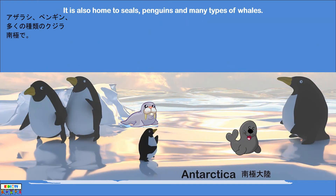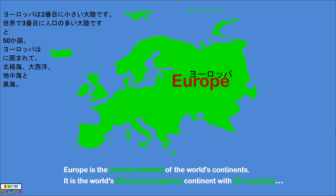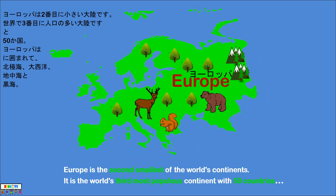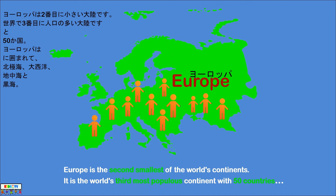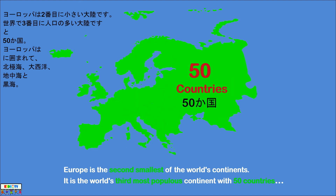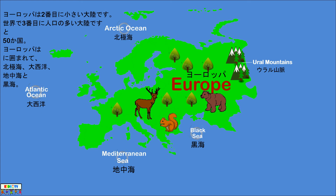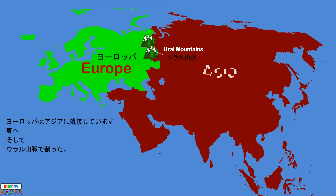Antarctica is also home to seals, penguins, and many types of whales. Europe is the second smallest of the world's continents and the world's third most populous continent, with 50 countries. It is surrounded by the Arctic Ocean, the Atlantic Ocean, the Mediterranean Sea, and the Black Sea. Europe is bordered by Asia to the east and divided by the Ural Mountains. The most popular attractions are the Eiffel Tower in France and Big Ben in England.